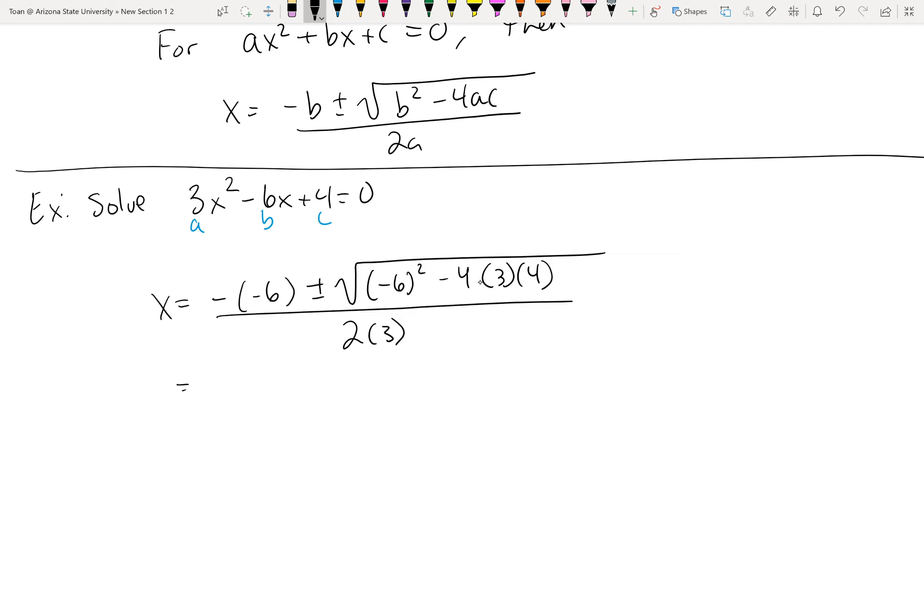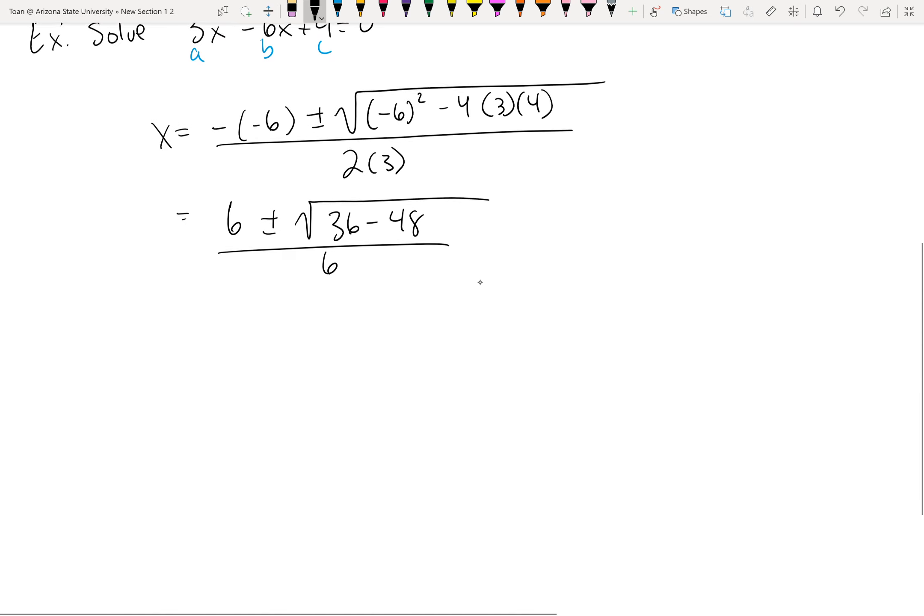So then we'll simplify. So we have -(-6) is a positive 6 ± √(36 - 48) all over 6. So then that gives us 6 ± √(-12) over 6. So normally this would be a bad thing, but we know how to handle this now. We're just going to pull out that negative with an i. So that's 6 ± i√12 over 6.